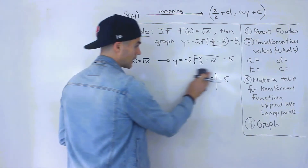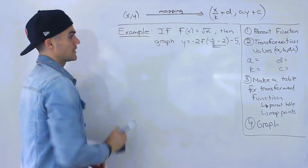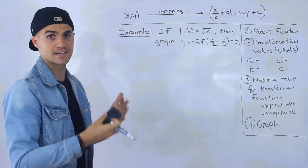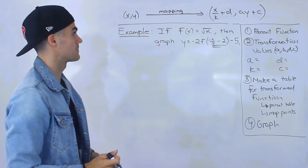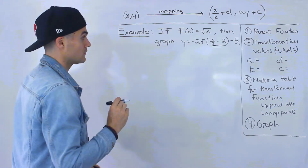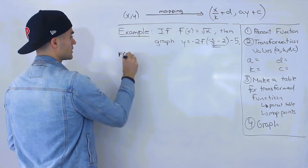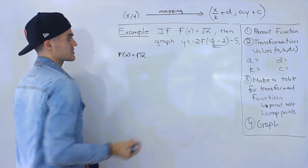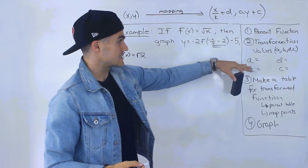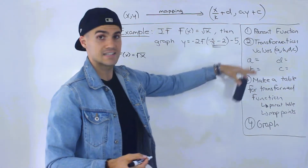I just want to mention that again — I mentioned it in the previous example — and I want to make sure you're comfortable knowing these questions can be asked in different formats. So to graph this, we follow the exact same steps as in previous examples. The first step is we need the parent function, which in this case is the square root of x. The next step is getting the transformation values: a, k, d, and c.